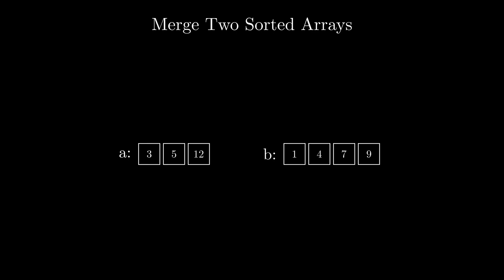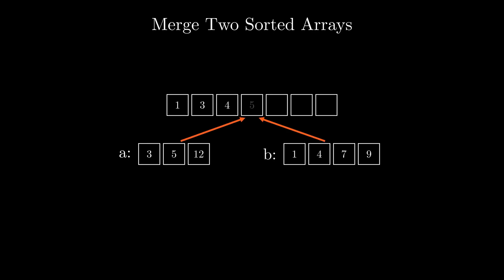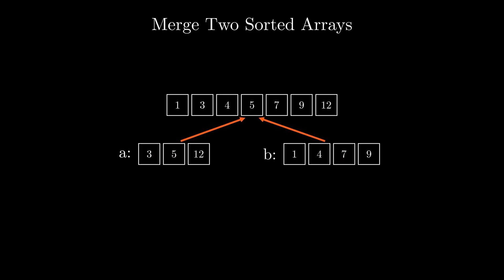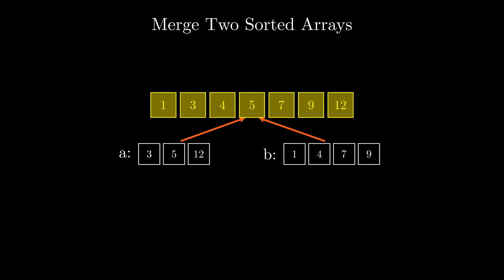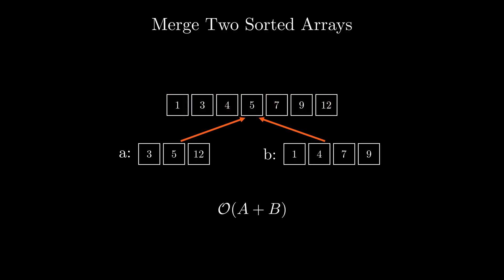The core idea behind MergeSort is the part that allows us to merge two sorted arrays into one sorted array in linear time. Given two sorted arrays A and B, we need to figure out a way of merging those two into one sorted array in O(A + B) time, where A and B are the corresponding sizes of the arrays. If you can figure out how to do that yourself, you've almost figured out the whole MergeSort algorithm on your own.